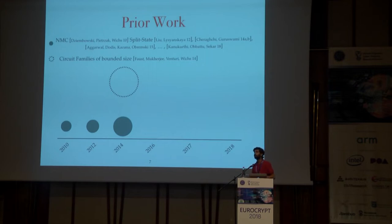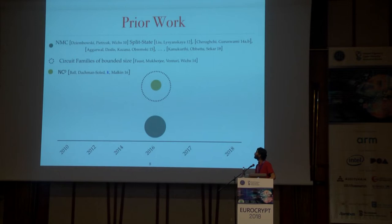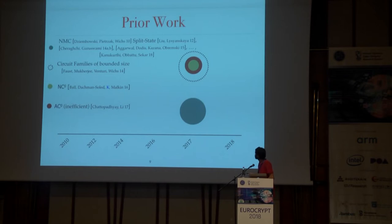Another natural way of restricting the adversary is by restricting the complexity of the tampering function. This was studied by Faust et al. in 2014, where they considered tampering functions modeled as circuit families of some bounded size. Then, in a follow-up, they considered tampering functions modeled as NC0 circuits — constant depth circuits with bounded fan-in. This line of work was further improved by another result where they gave non-malleable codes tamper-resilient against AC0 circuits, which are constant depth circuits with unbounded fan-in. However, that construction was inefficient in that the codeword length was not optimal.